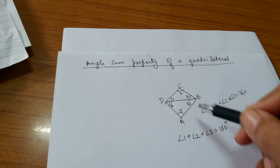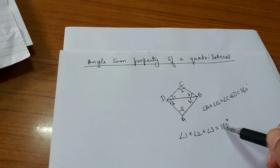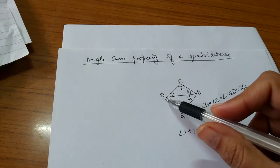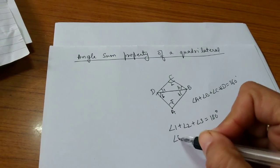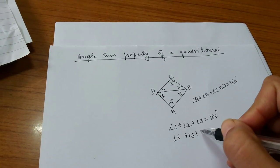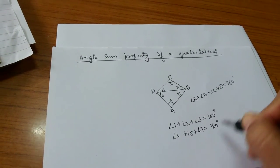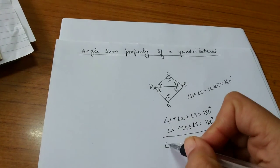Therefore angle 1 plus angle 2 plus angle 3 will be 180 degrees. Similarly, in triangle ABD, angle 6 plus angle 5 plus angle 4 will be 180 degrees.